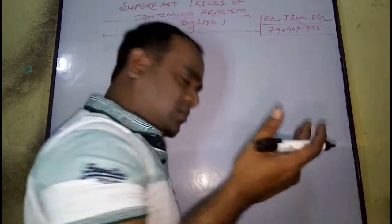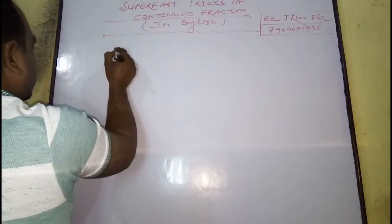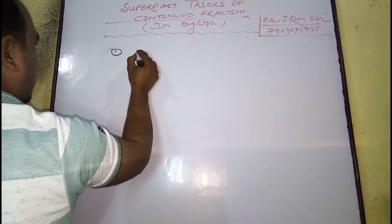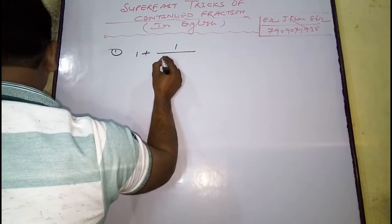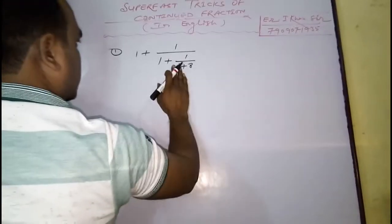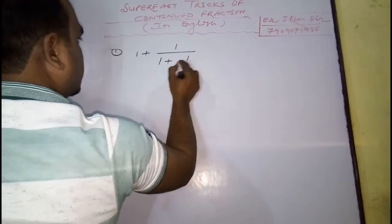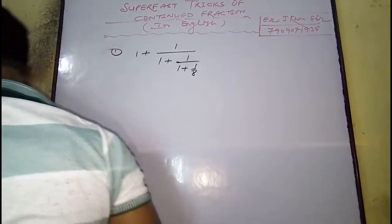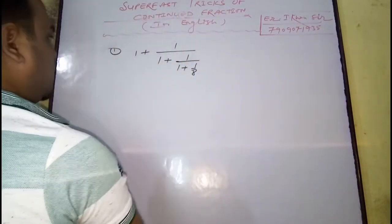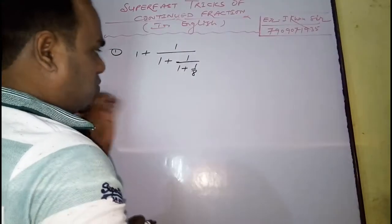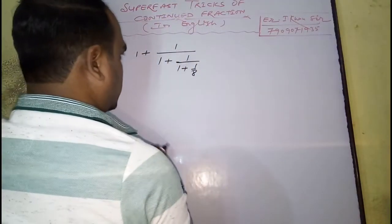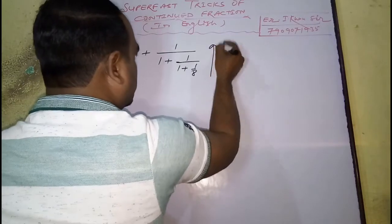How to solve it? I am taking one example which is just asked in competitive examinations. First of all: 1 plus 1 by 1 plus 1 by 1 plus 1 by 8. This type of question may be asked in examinations. The most important thing to solve this type of fraction is you have to start solving it from bottom to top.